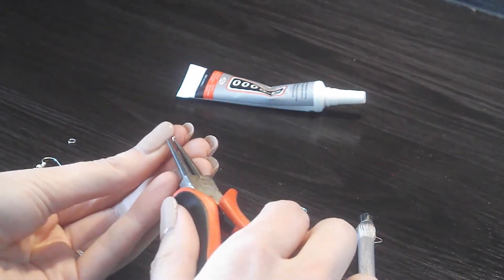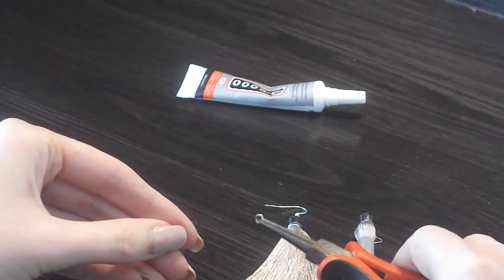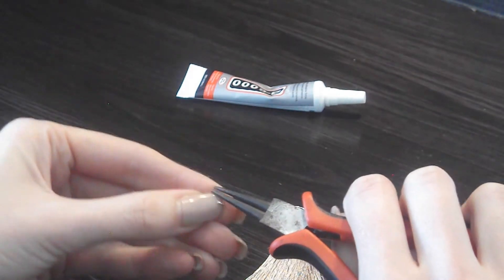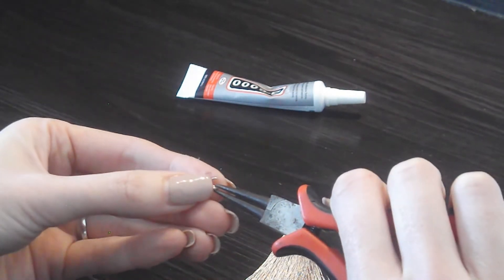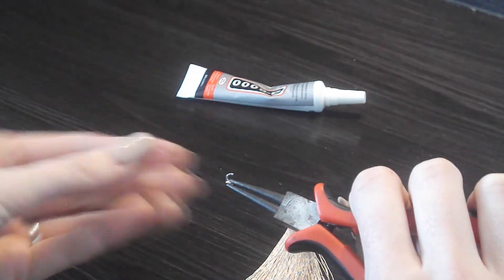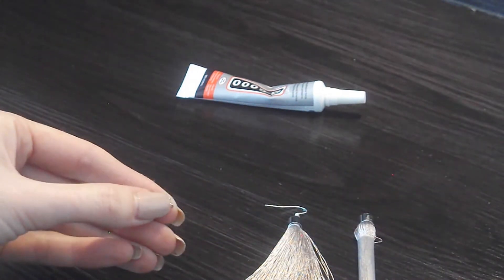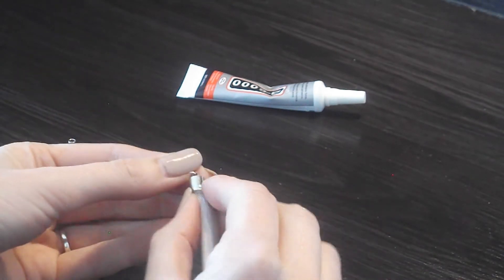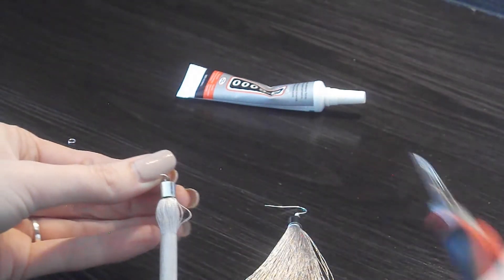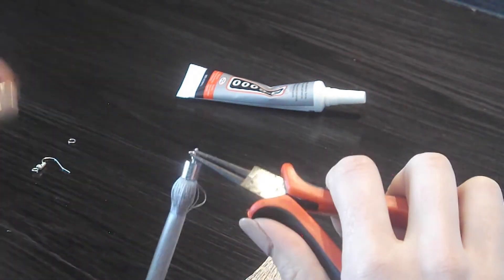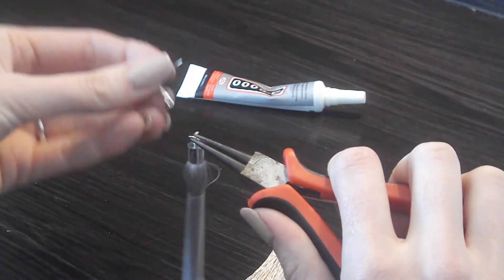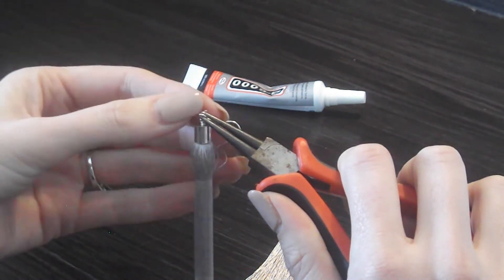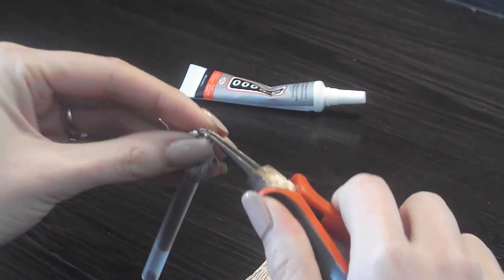So this time I'm going to take my round nose pliers and hold one side. And with my nail, open it up. So again, you push it away from each other to create a bigger gap and not to open it up to create a bigger hole. So I'm going to slip my tassel onto one side. And I'm going to also take the eye hook and slip that in as well. And then I'm just going to close it back up.